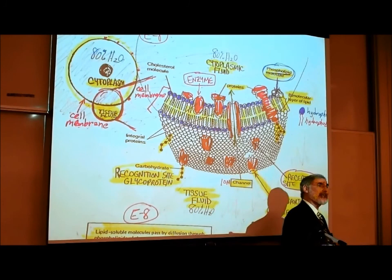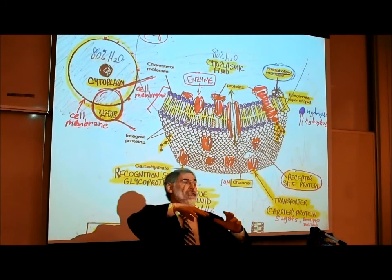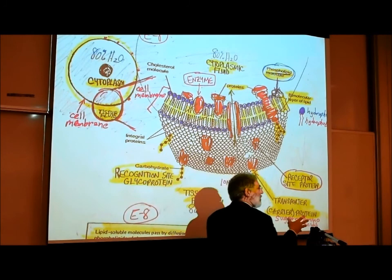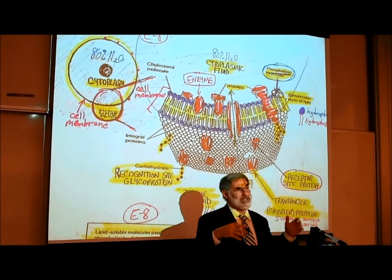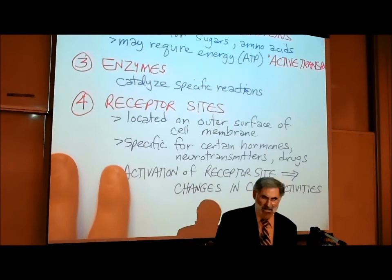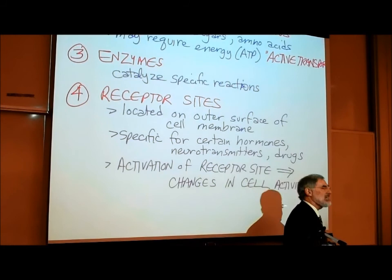Cells might have no receptor sites, or one or two different receptor sites for one or two different hormones, or they might have 20 different receptor sites and therefore can be affected by 20 different types of hormones. Not only are there receptor sites for hormones, but there are receptor sites for neurotransmitters and drugs.